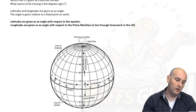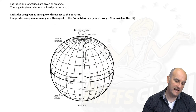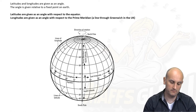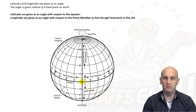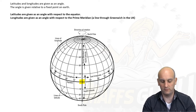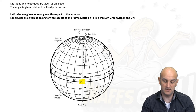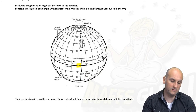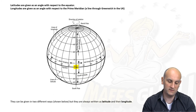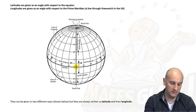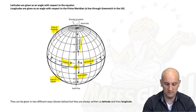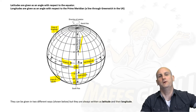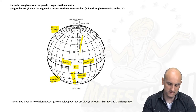Longitude and latitude are given as an angle relative to a fixed point on Earth — on the equator and on the prime meridian, that line that goes through Greenwich in the United Kingdom. The diagram here shows lines of longitude, lines of latitude, west longitude, east longitude, north latitude, south latitude, some angles, and the north and south poles. Great diagram!